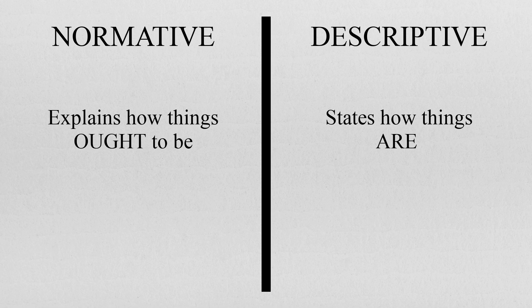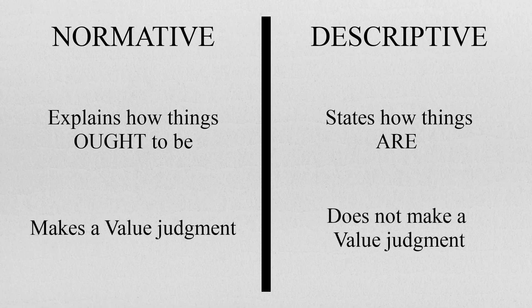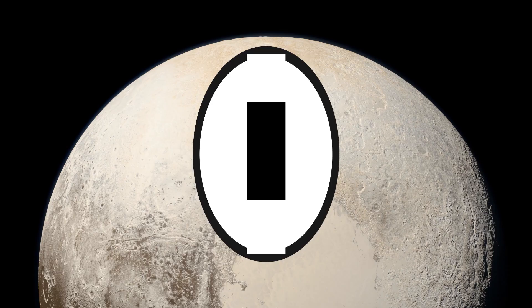When one takes the descriptive approach, morality is essentially considered as an emergent phenomenon due to human existence. One could think about it like some physical law that could possibly be captured by some principles. In this video we will give an argument in favour of considering morality as descriptively guided by the utilitarian principle.